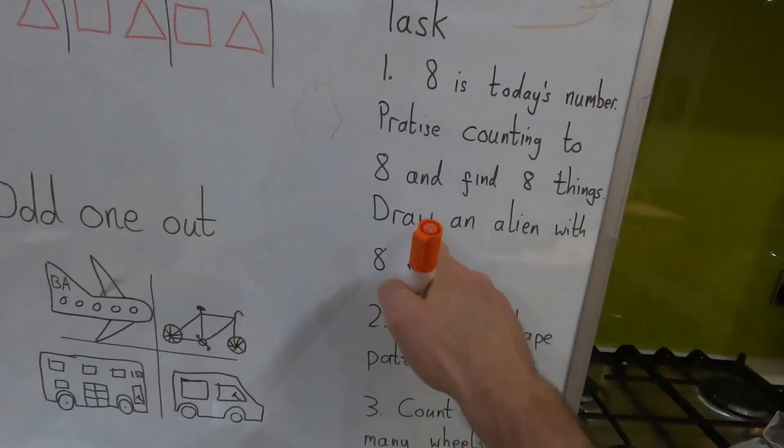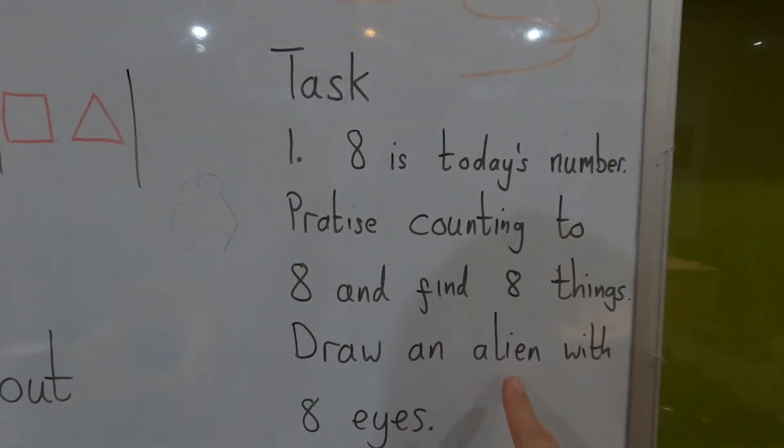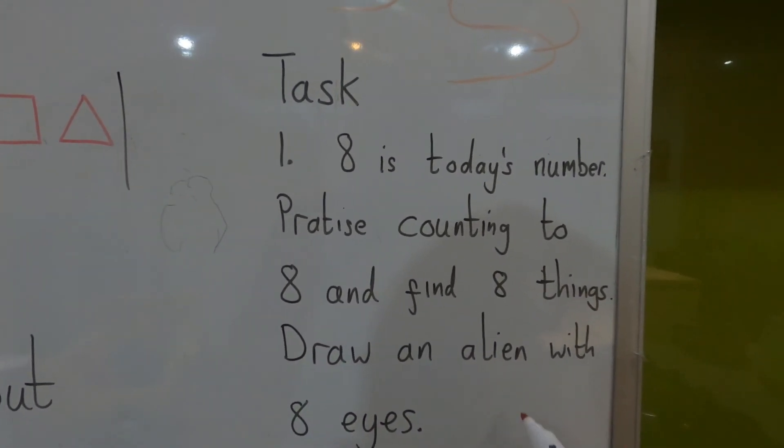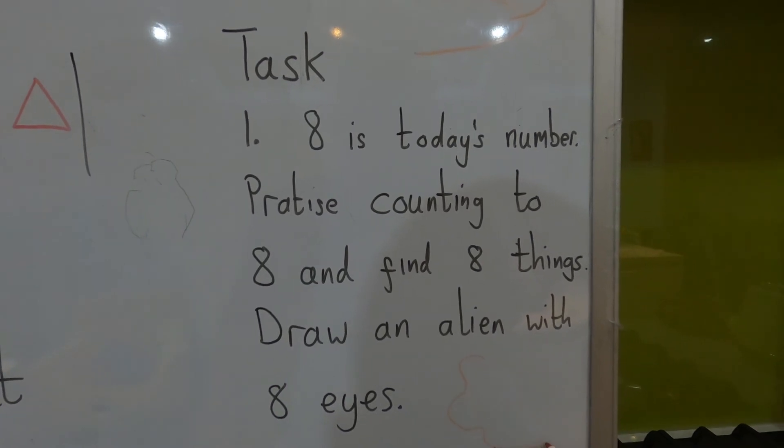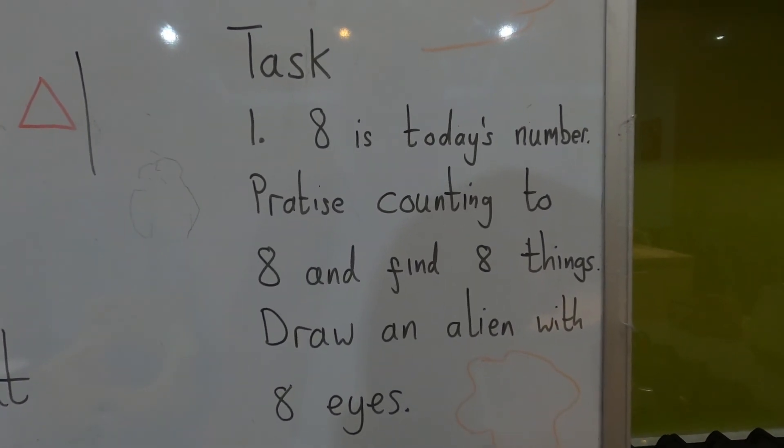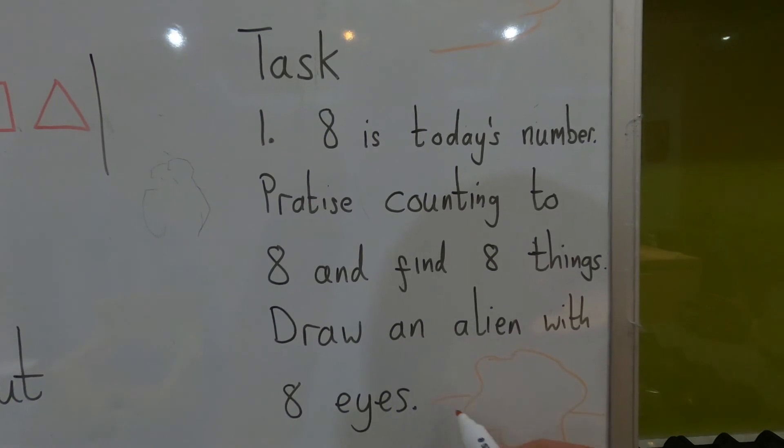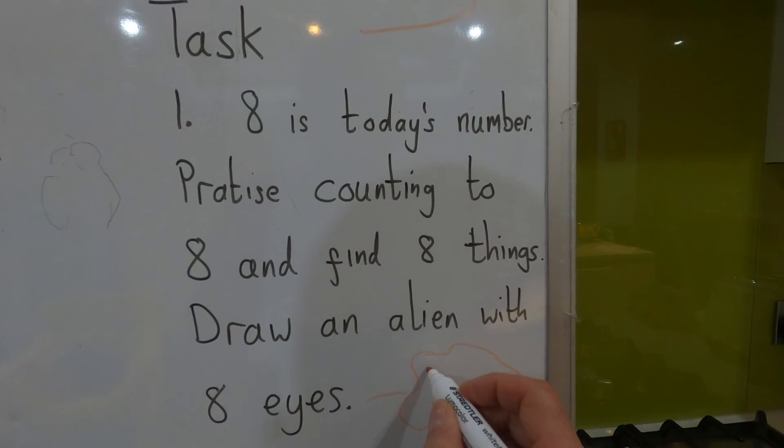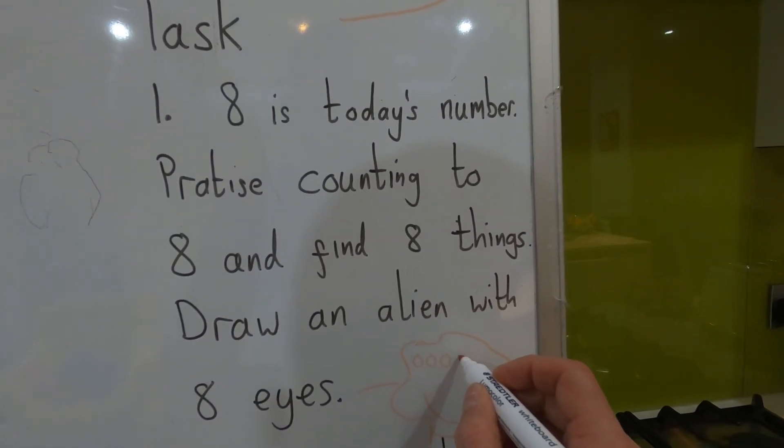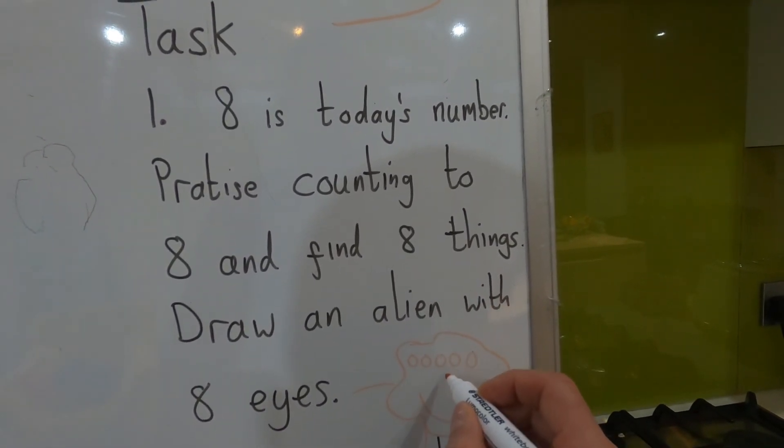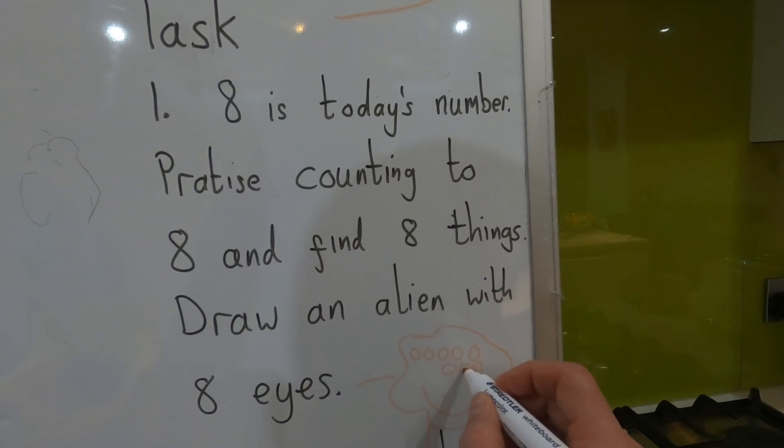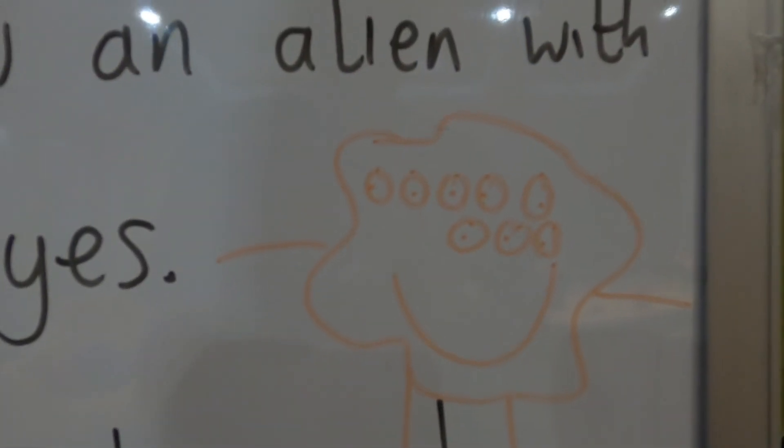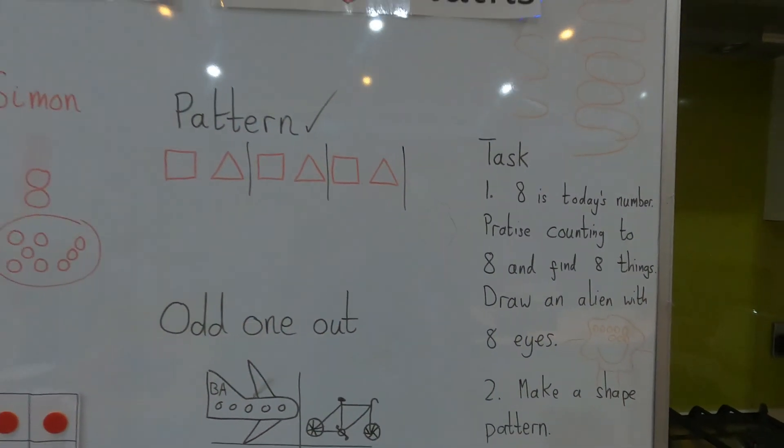Now I thought you could also draw an alien, like something from another planet, or a monster with eight eyes. So a good thing is a wiggly, wobbly thing like this. Let's give it some legs, give it some arms, give it a mouth. It's a happy alien, but we have eight eyes: one, two, three, four, five, six, seven, eight. Eight eyes. A monster with eight eyes. Can you do that?